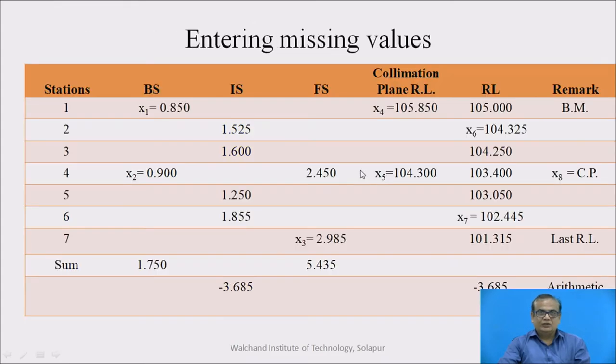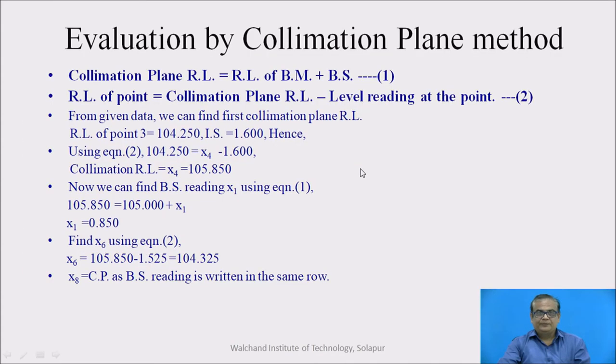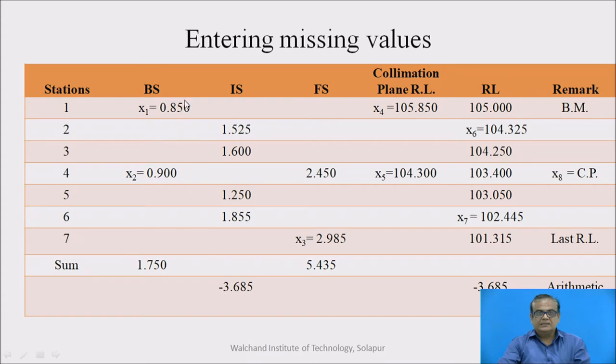So putting the values in this equation, what we get? 105.850 is equal to 105 plus X1. So X1 is 0.850. One can easily find this value also. So backside reading is available.